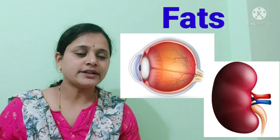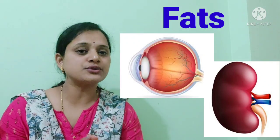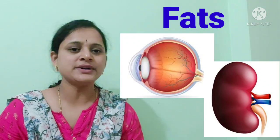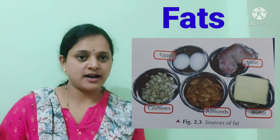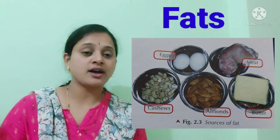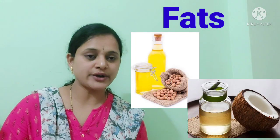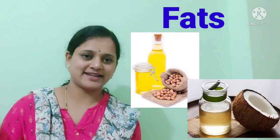Fatty tissue also surrounds some internal organs such as the eyes and kidneys, offering protection from damage. Now let us see examples of fat-rich foods: egg, meat, cashew nuts, almond, butter, groundnut oil, coconut oil, and fish.